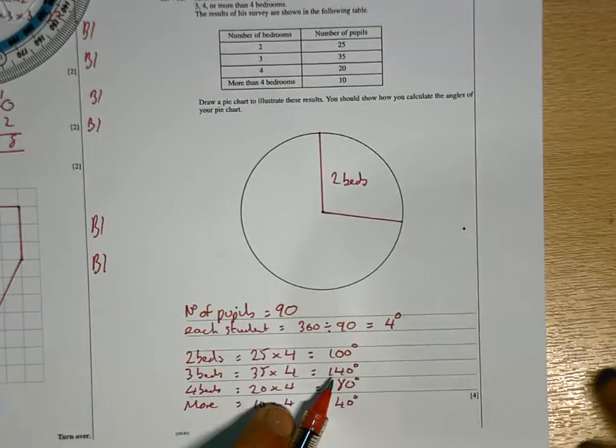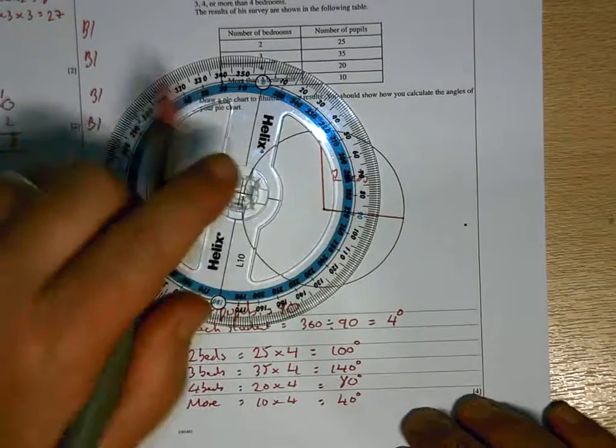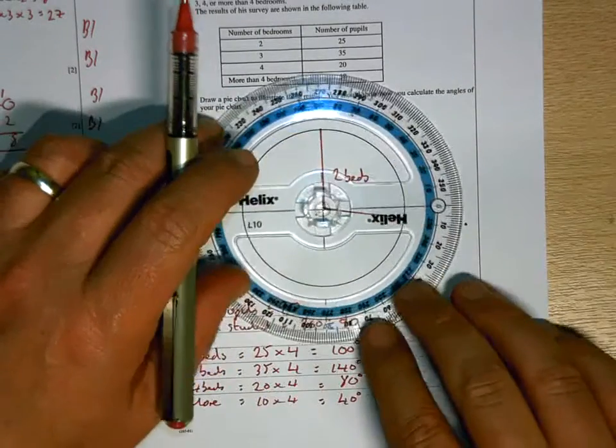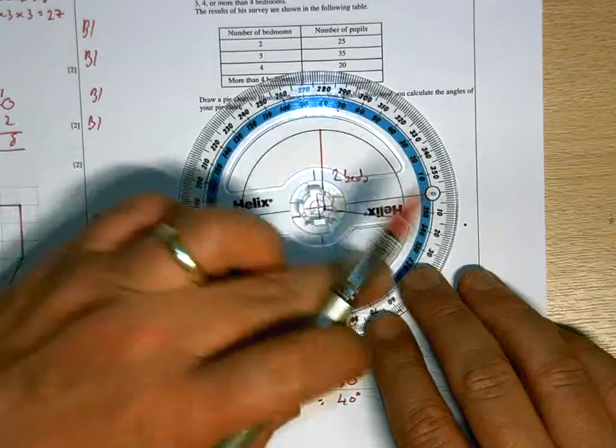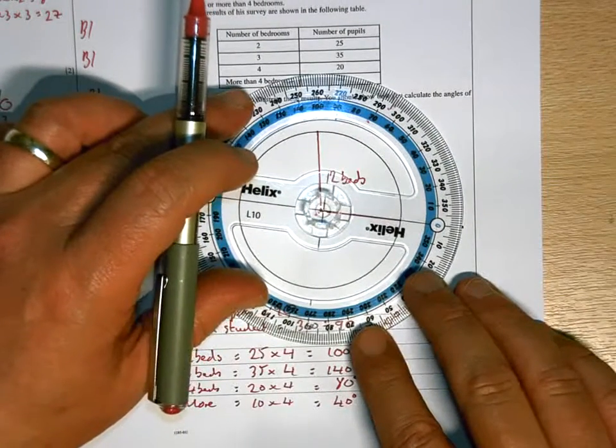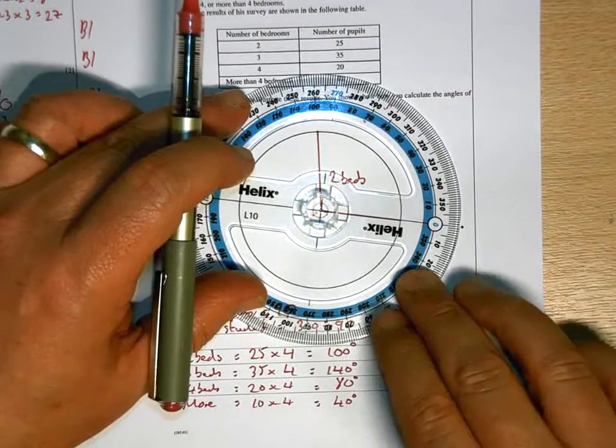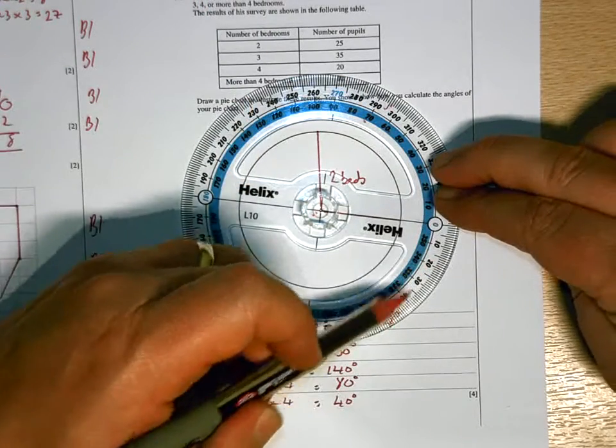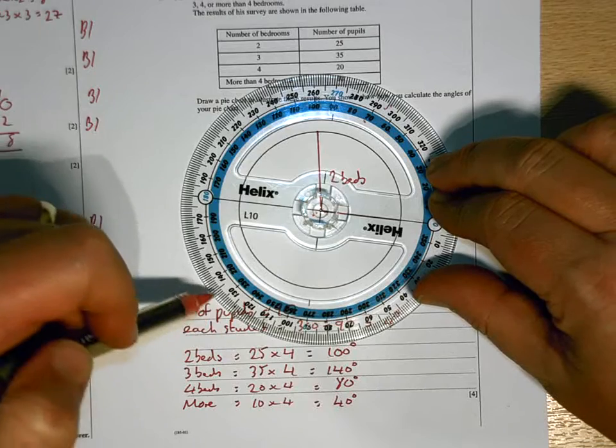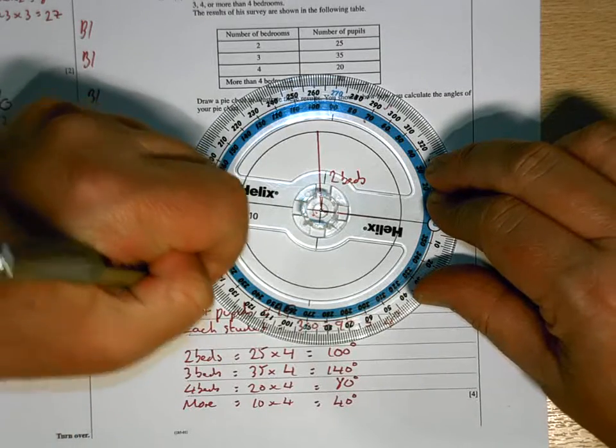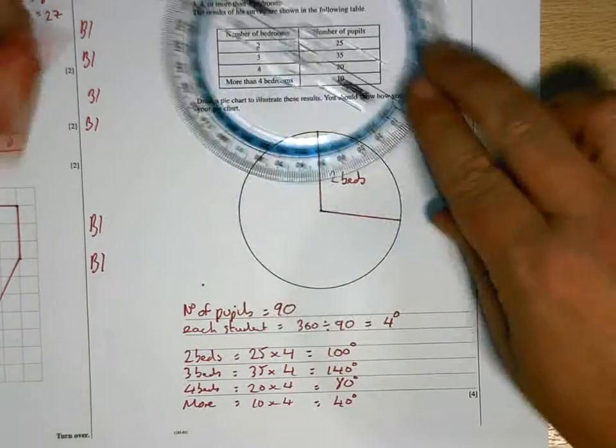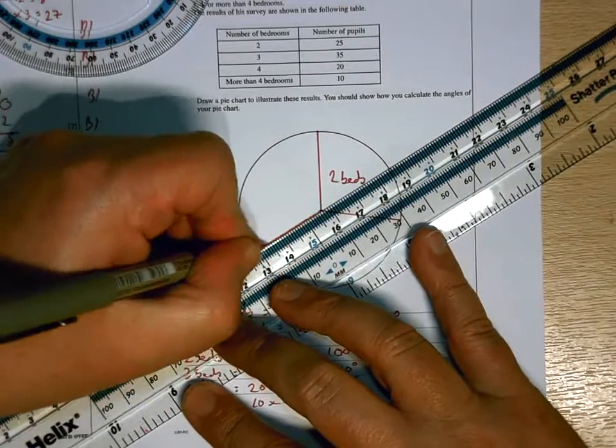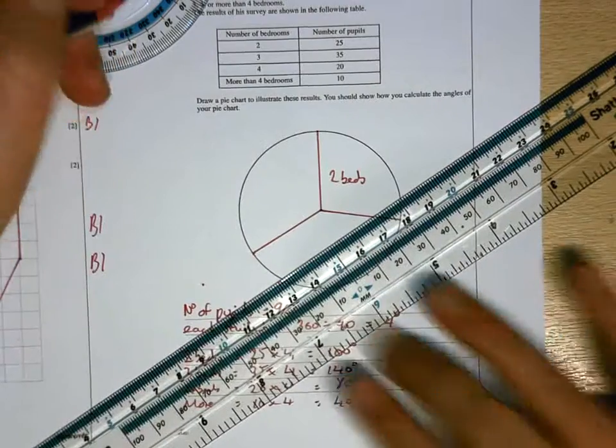The next slice now is 140 degrees. But you have to turn your protractor, so the 0 is at the start of the next slice. So it isn't at the top anymore, it's coming around to there. And again now I need to go around 140 degrees. It's the outside scale. 110, 130, 140 is there. So that's my 3 beds.